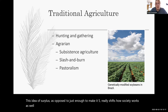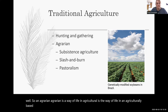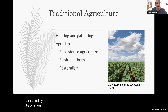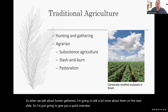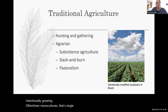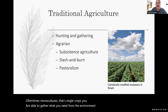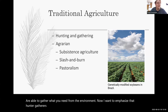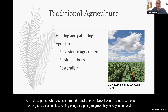An agrarian is a way of life in an agriculturally based society. When we talk about hunter-gatherers — rather than intentionally growing monocultures, that's single crops — you are able to gather what you need from the environment. I want to emphasize that hunter-gatherers aren't just hoping things are going to grow. They're very intentional about how they engage with the environment, and we'll get more into that in the next slide.